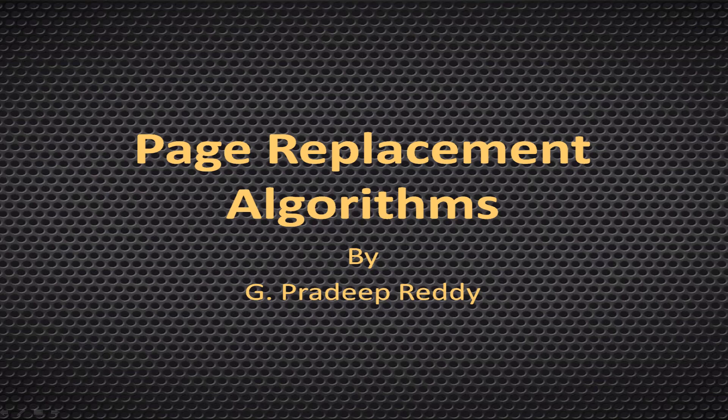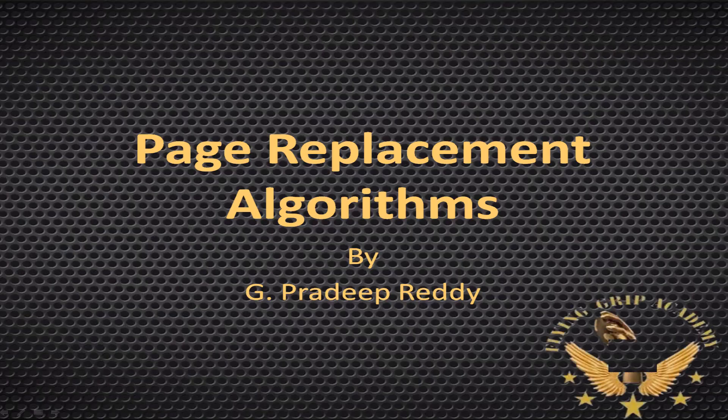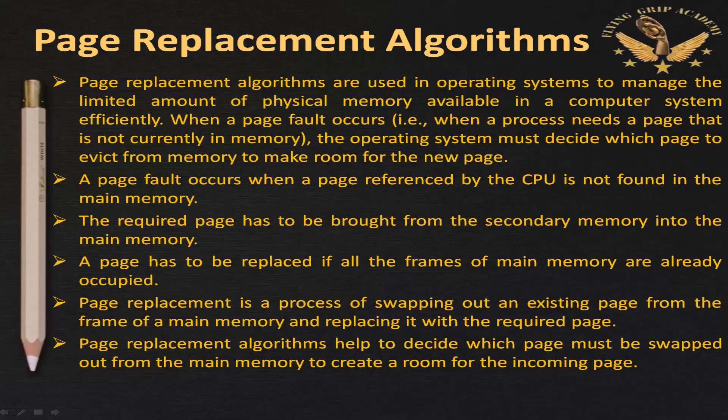We are going to discuss page replacement algorithms. Page replacement algorithms are used in operating systems to manage the limited amount of physical memory available in a computer system efficiently. Physical memory means RAM and hard disk. RAM is a primary memory and hard disk is a secondary memory.